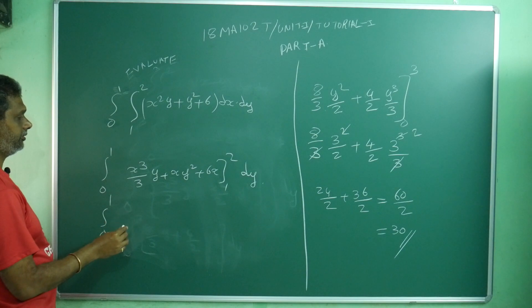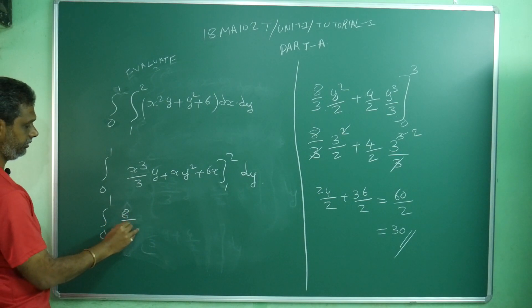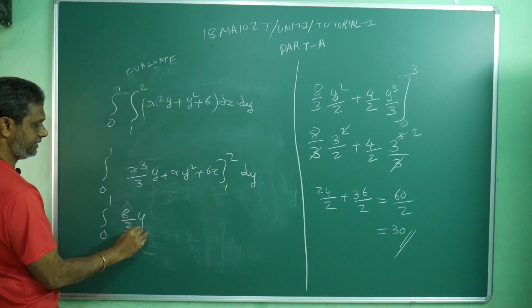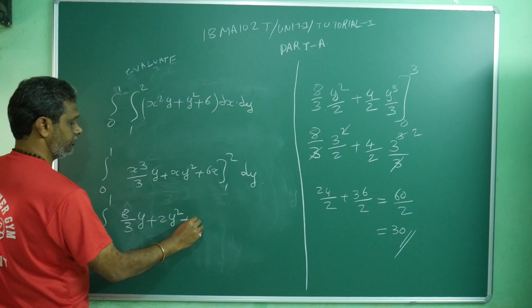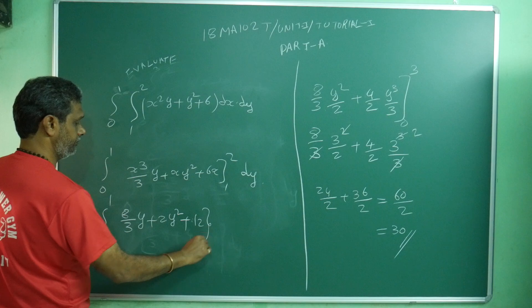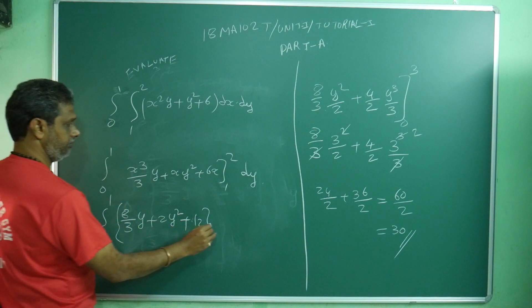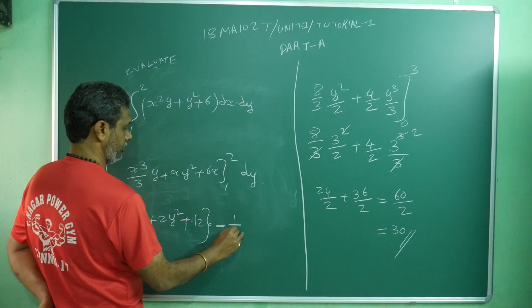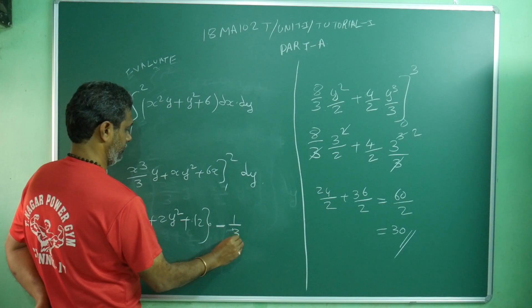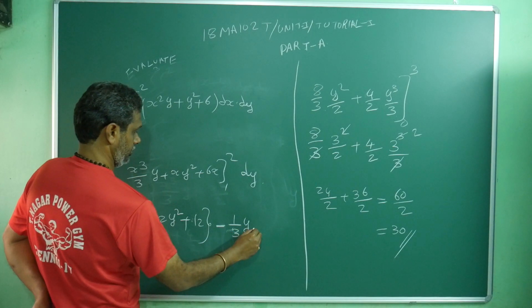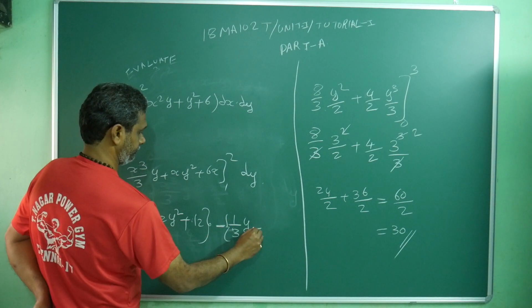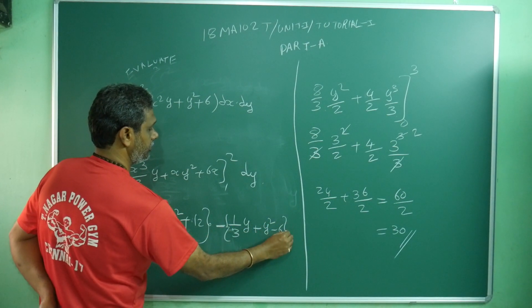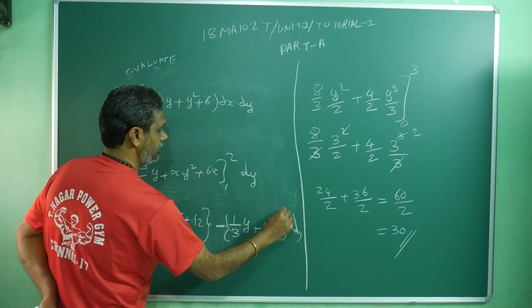Apply upper limit minus lower limit. If you apply upper limit, what will you get? 8 by 3, 2 cubed y as is, plus 2y squared plus 6 times 2, 12, minus apply lower limit: 1 by 3 y minus of lower limit plus y squared minus 6 dy.